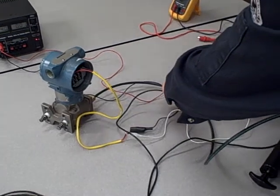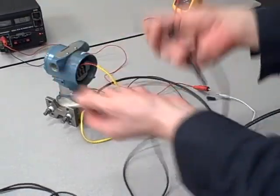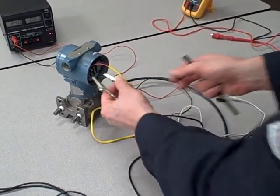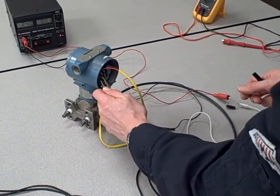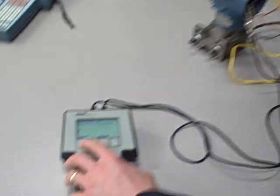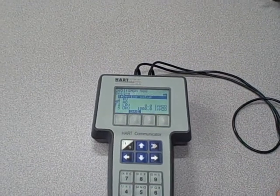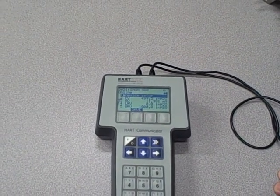However, we don't have to hook it across the resistor. As I said before, the most common connection point is directly across the terminals of the transmitter. But it's important to realize that it's not the only place you can connect it and have it work.